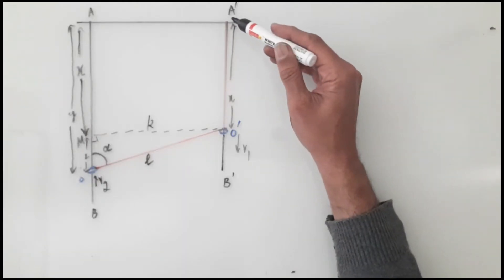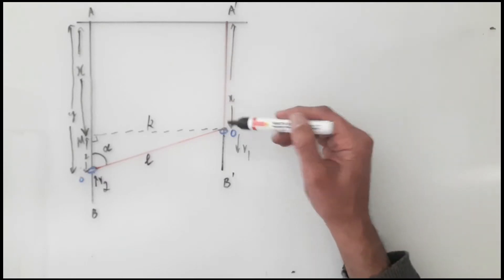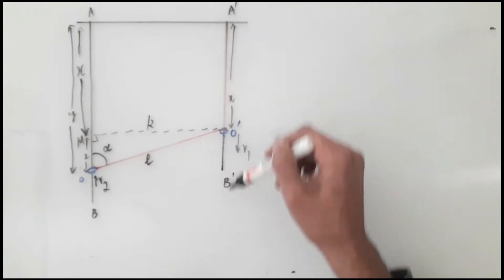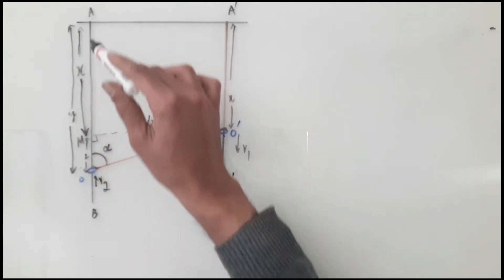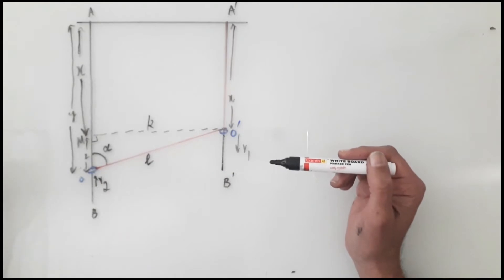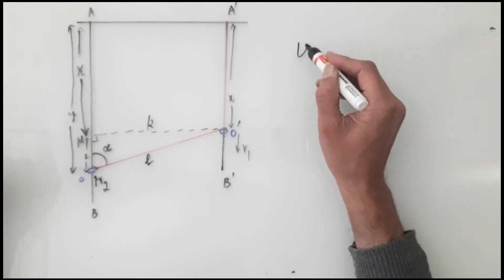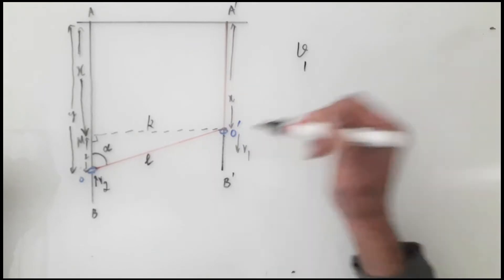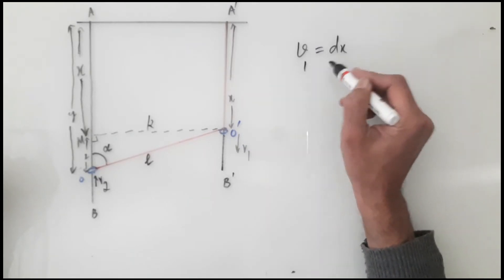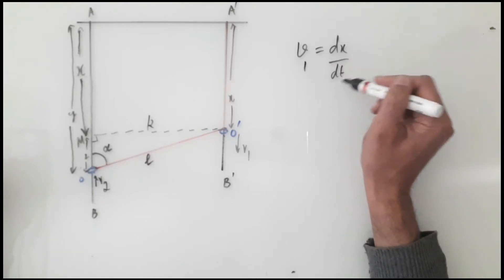Here is the question. Let's look at O' — let's call this length as x. If you just drop a perpendicular from A'B' onto AB, then the length AM (M is the foot of this perpendicular) is also equal to x. Now it's already given to us that the speed v1 of the ring O' is equal to dx/dt. As per the question, x increases with time, so this is a positive term, and this is indeed the velocity.